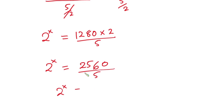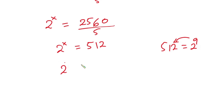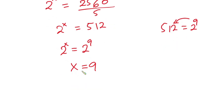So 2 to the power x equals 512. Now, 2 to the power 9 equals 512. So in place of 512 we put 2 to the power 9. We have 2 to the power x equals 2 to the power 9. Since the bases are equal, we can equate the exponents, giving us x equals 9.